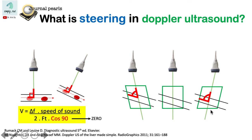If we place an incorrect angle of the steering box, note that the Doppler angle here is large and is more than 60 degrees. Hence, this will get us an inaccurate measurement of the velocity.